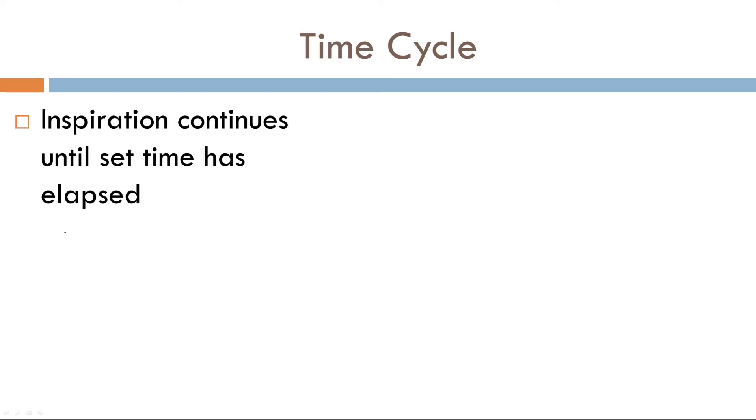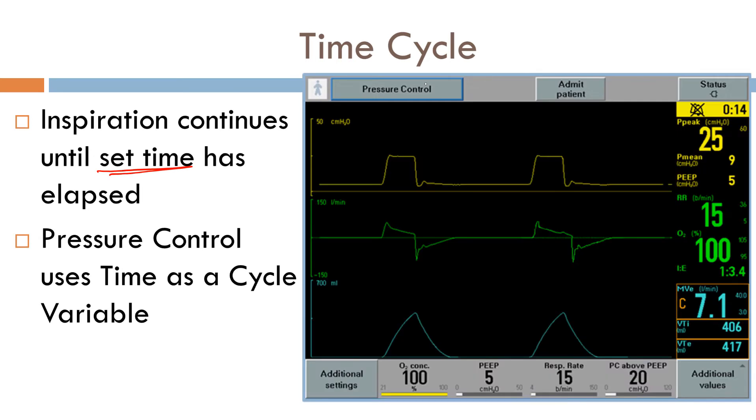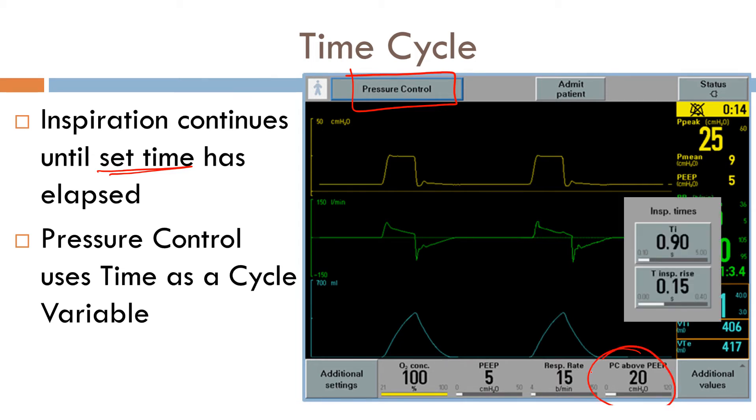So we'll talk about what that means in a minute, but let's go over time cycle. The definition is inspiration will continue until a set time has elapsed. So interestingly enough, in pressure control ventilation, the cycle variable is time. As we can see, we're in pressure control. So just to recap, what is our target variable in pressure control ventilation? It's pressure. Now the cycle variable in pressure control is time. I had alluded to this before.